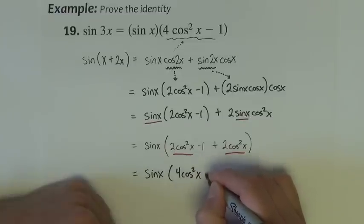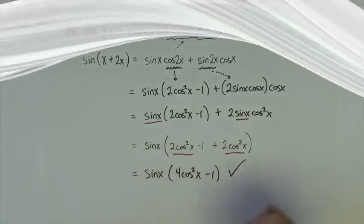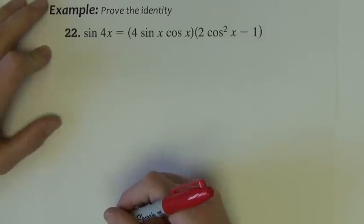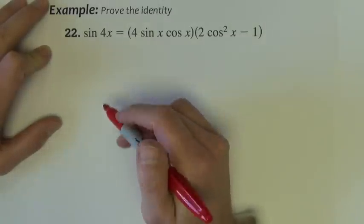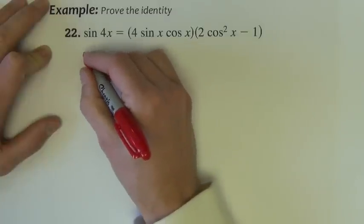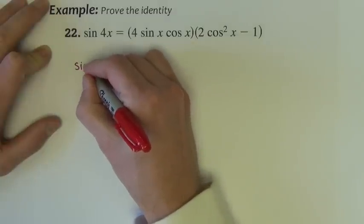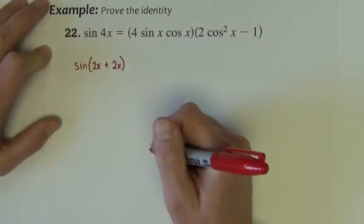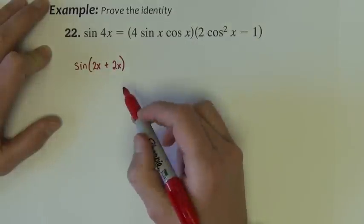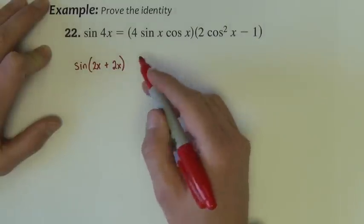Last problem gives us another multiple angle look, we've got sine 4x. For sine 4x I'm going to split it up, sine 2x plus 2x.